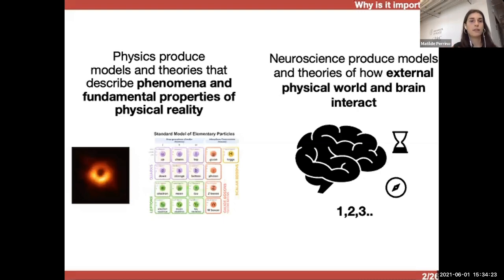So just to start, we know that physics produce models and theories that describe phenomena and the fundamental properties of physical reality, but what neuroscience does or tries to do is to produce models and theories of how this external physical world and our brain interact. So with respect to, for example, space, time and number, we usually associate them to our theories and symbolic knowledge, but they are really the real domains and structure of the experience of any biological organism.